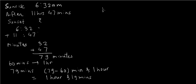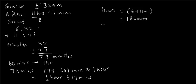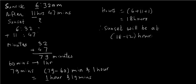Now adding the hours: 6 plus 11 plus the additional 1 hour equals 18 hours. But in a day there are only 12 hours, so 18 minus 12 is 6. So sunset would be at 6:19 p.m.